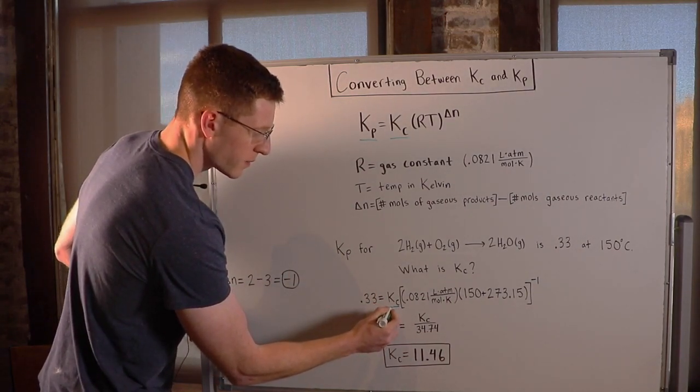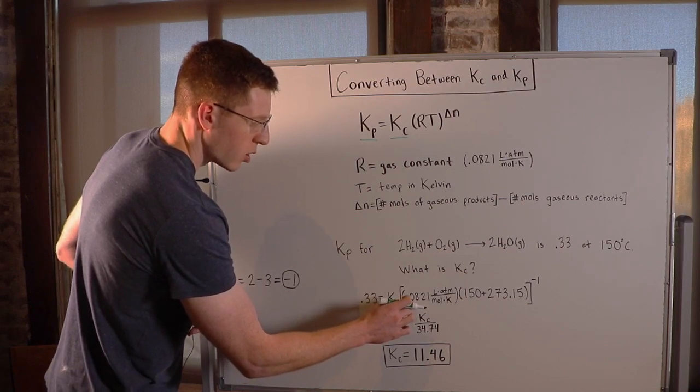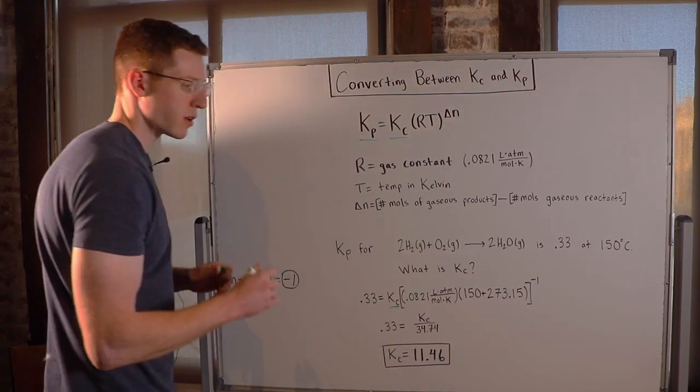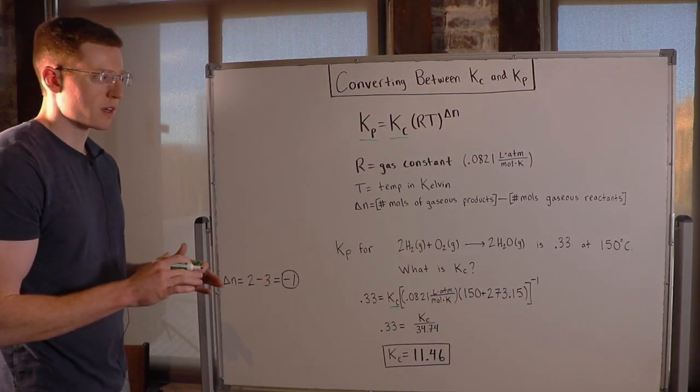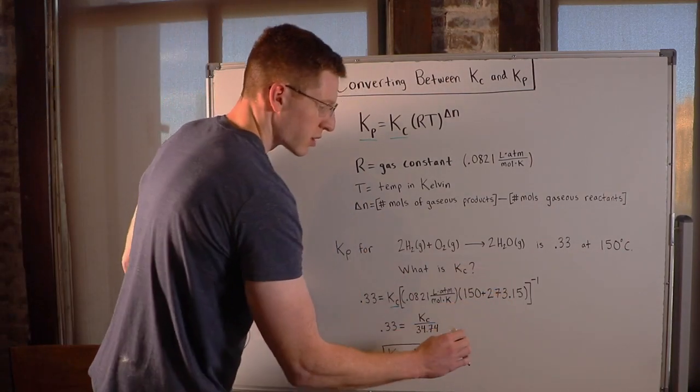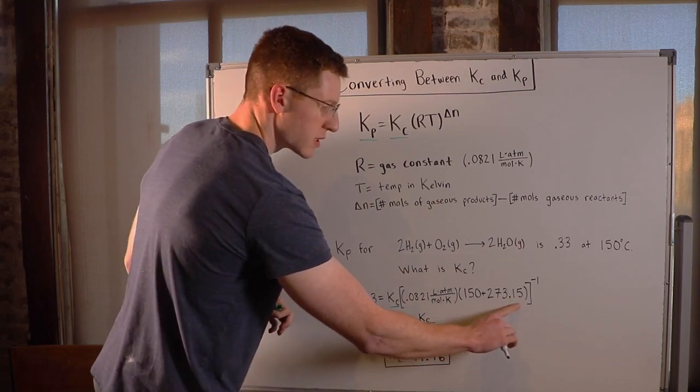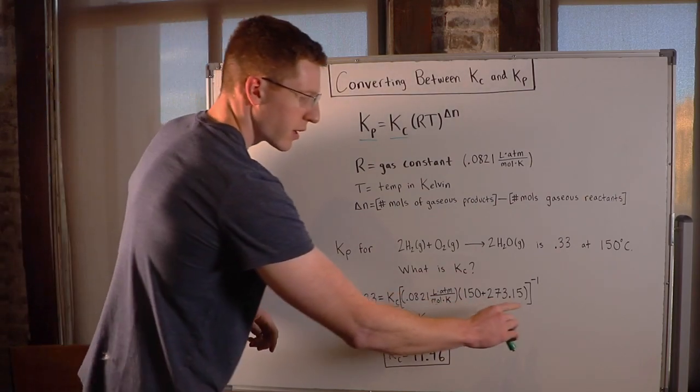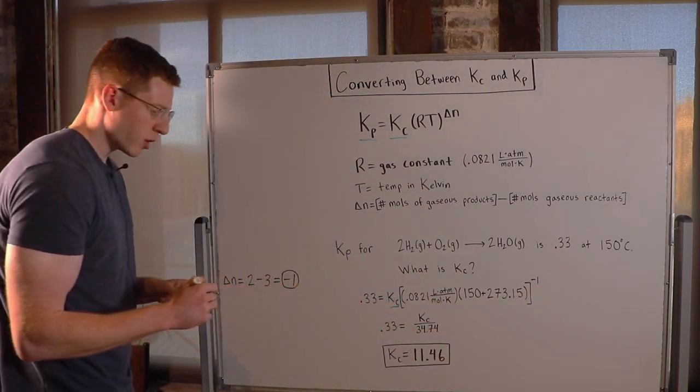And this is very important. The temperature must be in Kelvin, but it was given in Celsius. So to convert it to Kelvin, I added 273.15 to 150. And then my delta N up here, you can see is negative one.